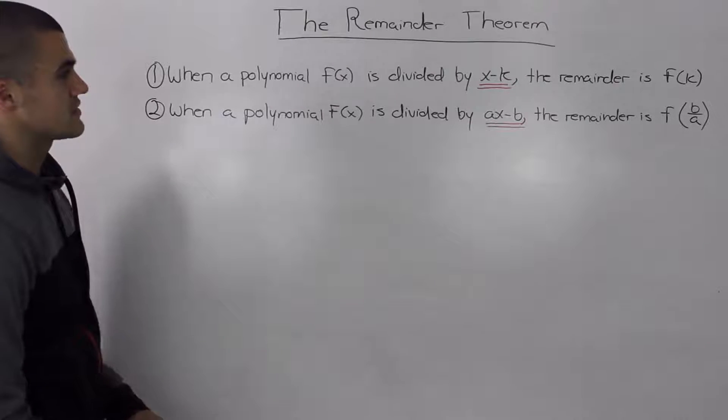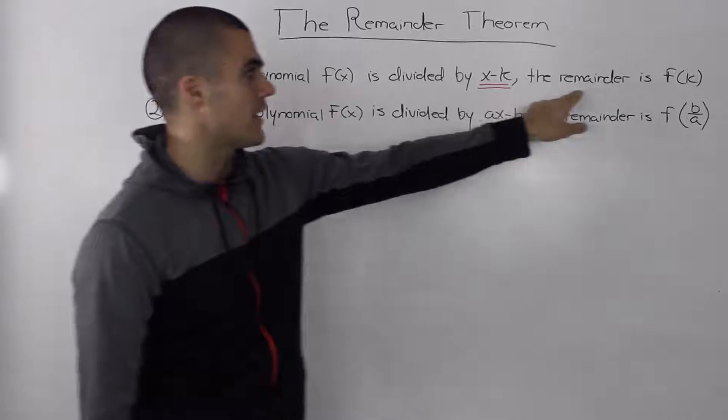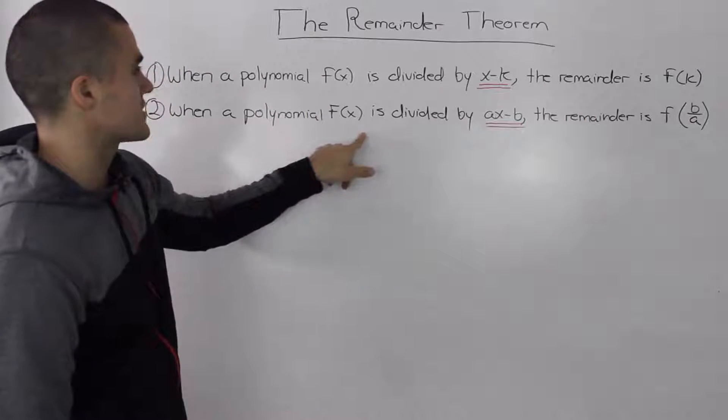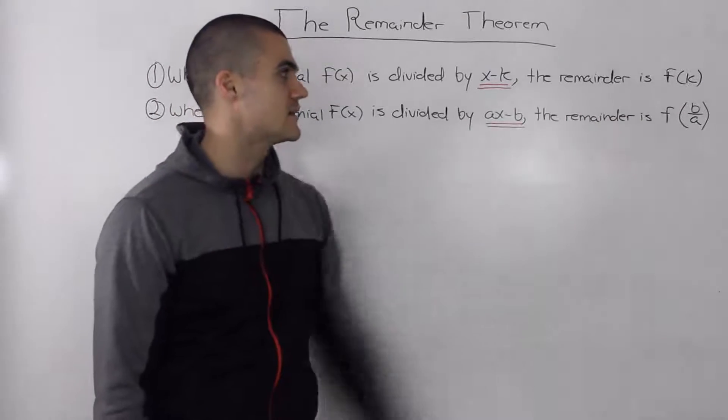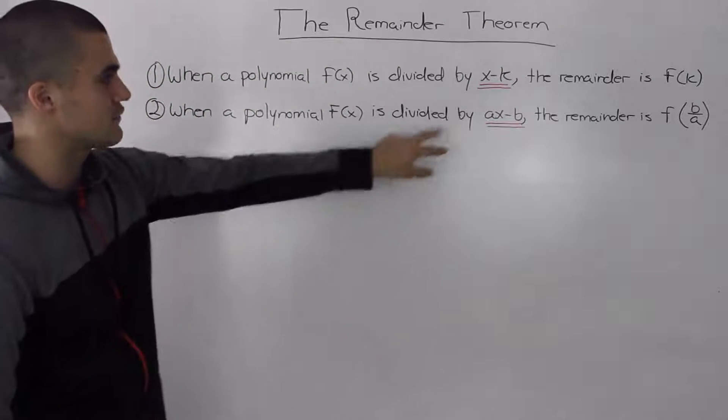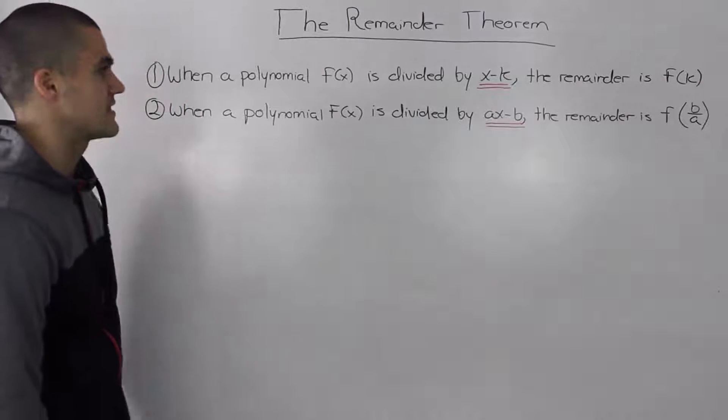With the remainder theorem there are two cases to consider. When a polynomial f(x) is divided by a divisor of x minus k, the remainder is just f(k). And when a polynomial f(x) is divided by ax minus b, the remainder is f(b/a). The two cases basically differ by what kind of divisor you're working with, sort of like we had in synthetic division.